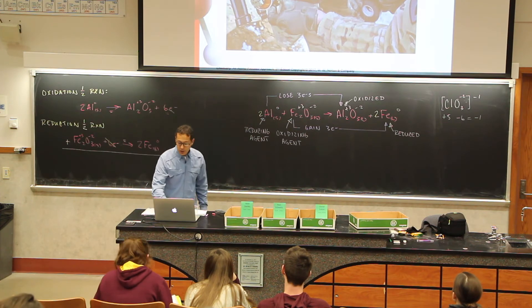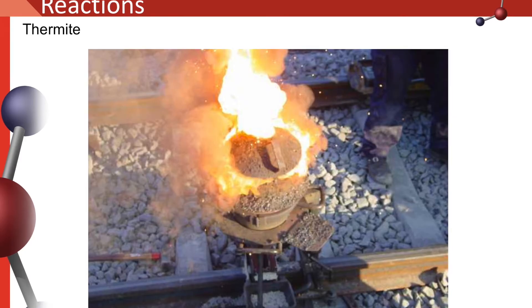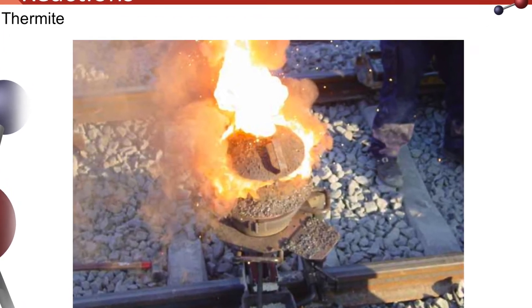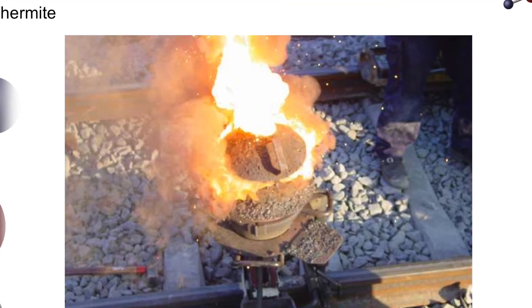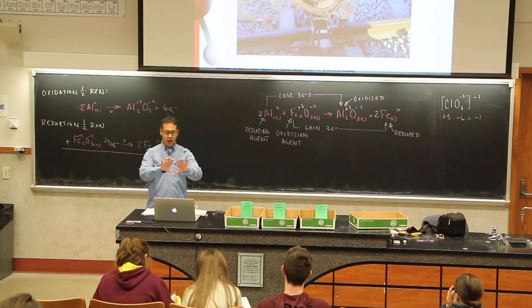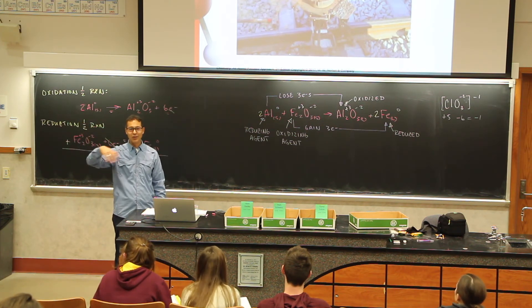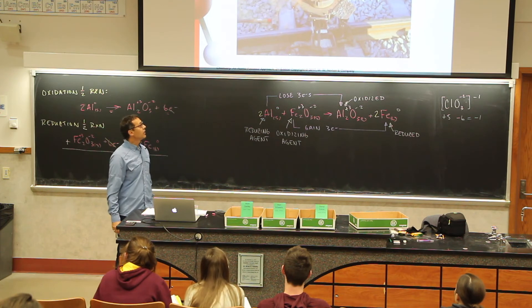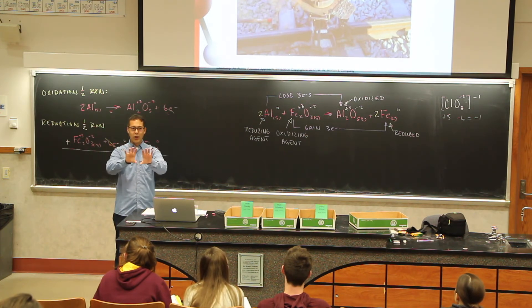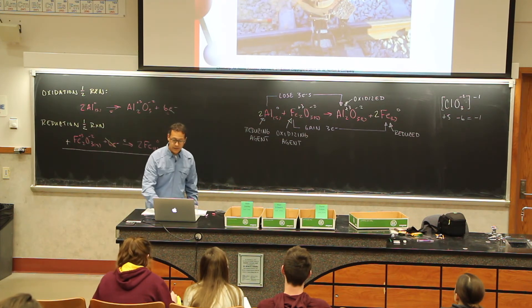A more practical use of thermite is in the railroad business. When they have railroad, what do they call it, the steel things that the train, the tracks. Yeah, so they want to weld them together, but you don't want to carry welding equipment way out into the boonies across the tracks. What they'll do then is they can use thermite to melt the two pieces of track together out there. So that's what thermite is.